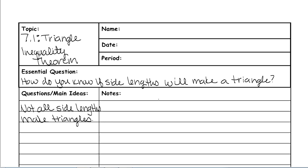There are three different instances to consider. Triangles always have three sides — that is the definition of a triangle — and out of those three sides, there's usually a small, a medium, and a large side. The three cases are: what if the small and the medium added together is less than the large side, if they are equal to the large side, or if they are greater than the large side?